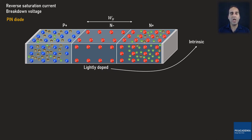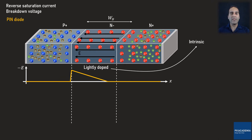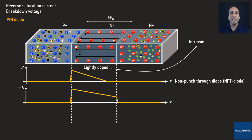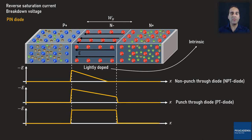What is left behind is an ionized N-minus region, so there is an electric field all the way from the N-minus semiconductor to the P-plus semiconductor. Depending on the dopant concentrations of the three regions, the N-minus can be completely or partially ionized, affecting the internal electric field profile. If the electric field profile looks like a triangle, the PIN diode is called a non-punch-through or NPT diode. If it looks like a trapezoid, it is called a punch-through or PT diode. If it is rectangular, it is called a punch-through-limit or PT-limit diode.